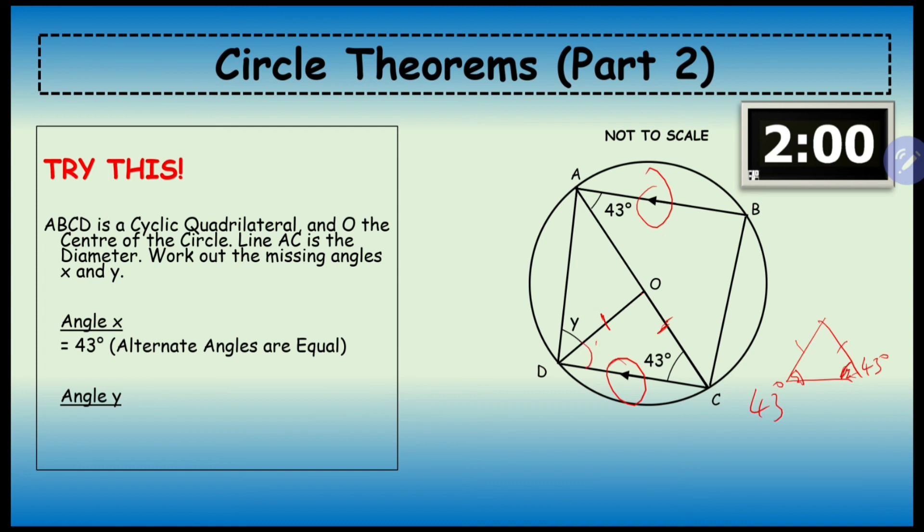Now if this angle here is 43 also, we can see going back to the first rule that we learned that this angle, which is angle x plus the 43, is going to be 90 degrees because it is the angle in a semicircle. So what we get is 90 minus 43, which is going to give us an angle of 47 degrees... 56 degrees.